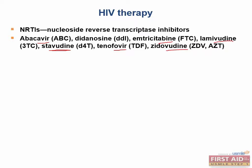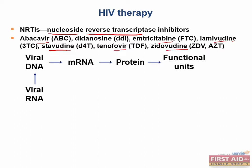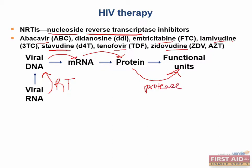As the name suggests, these drugs are nucleoside analogs that inhibit the reverse transcriptase enzyme of HIV. HIV RNA is converted to DNA with reverse transcriptase — these nucleoside analogs competitively inhibit that reverse transcriptase enzyme, blocking that step. The important thing to know about these drugs is that they must be phosphorylated to be active.